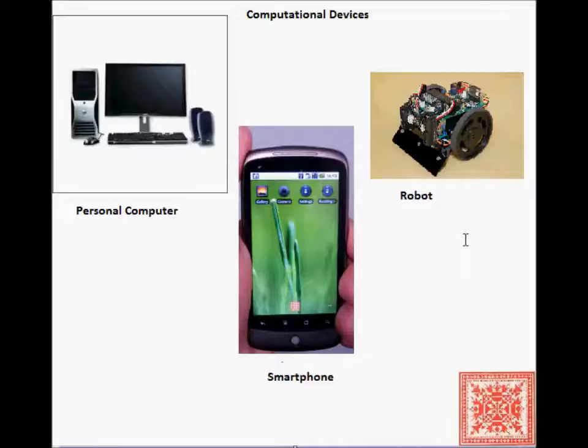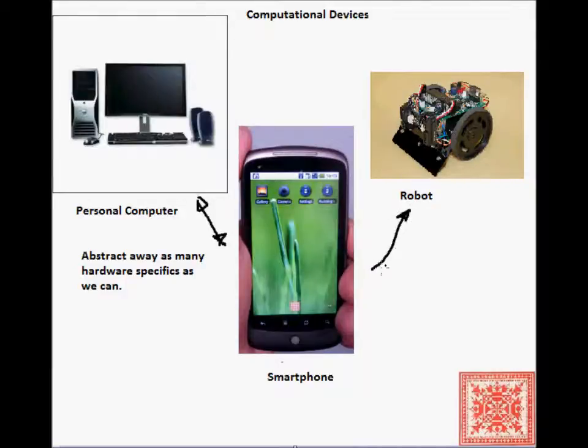They are different in terms of their processing power, their operating systems, their chips, their appearances, the target audiences that they are serving, and their user interfaces. But theoreticians try to abstract away as many hardware details as possible, because even though the devices are different, they are pairwise different. The PC is different from the smartphone, very different, and the smartphone is different from the robot, and the robot is different from the PC.